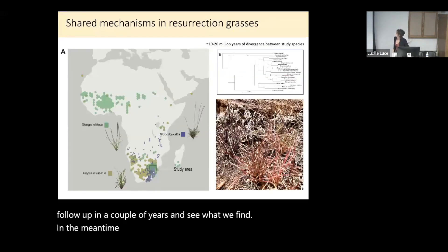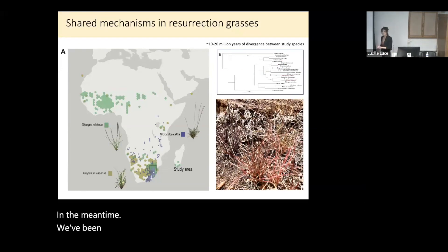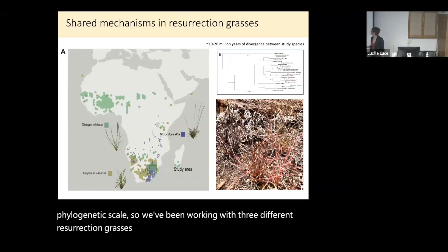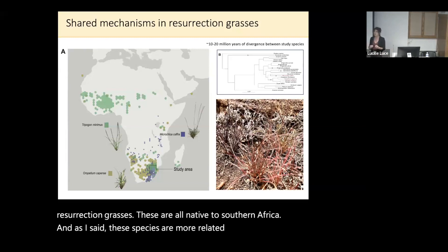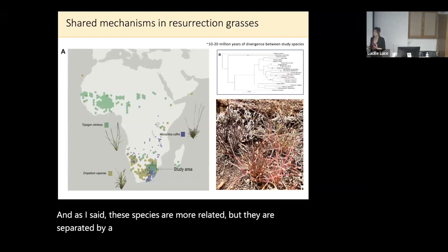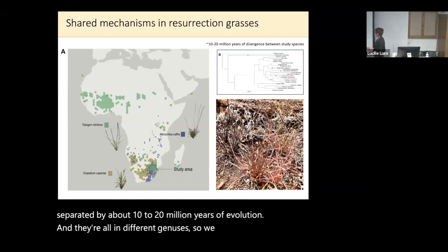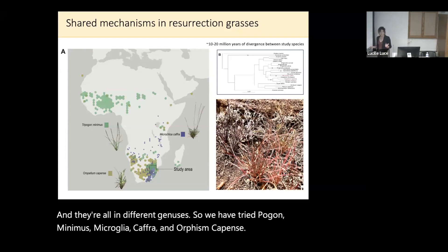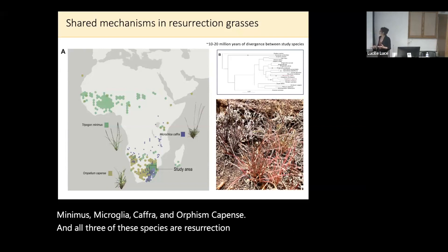In the meantime, we've been trying to ask a similar question but on a more narrow phylogenetic scale. We've been working with three different resurrection grasses, all native to Southern Africa: Tripogon minimus, Microfloa cafra, and Oropetium capense. These species are more related but are separated by about 10 to 20 million years of evolution, and they're all in different genera. All three are desiccation tolerant, and they're nice to work with — they produce a lot of seed and we can grow them up in just a few months.